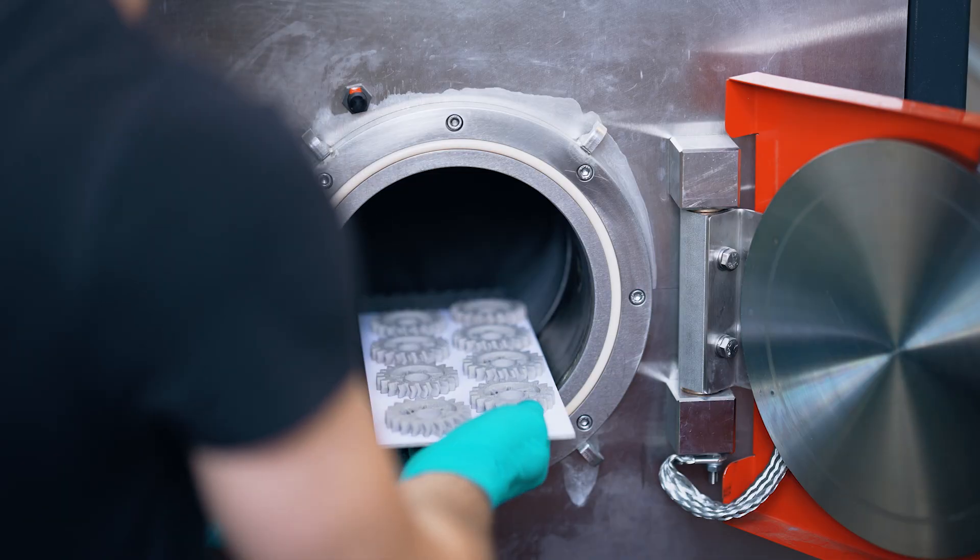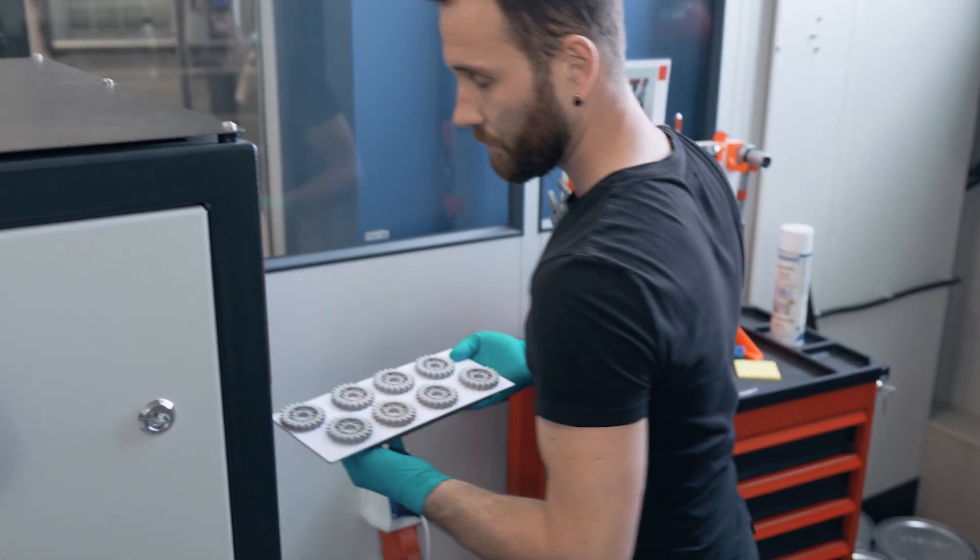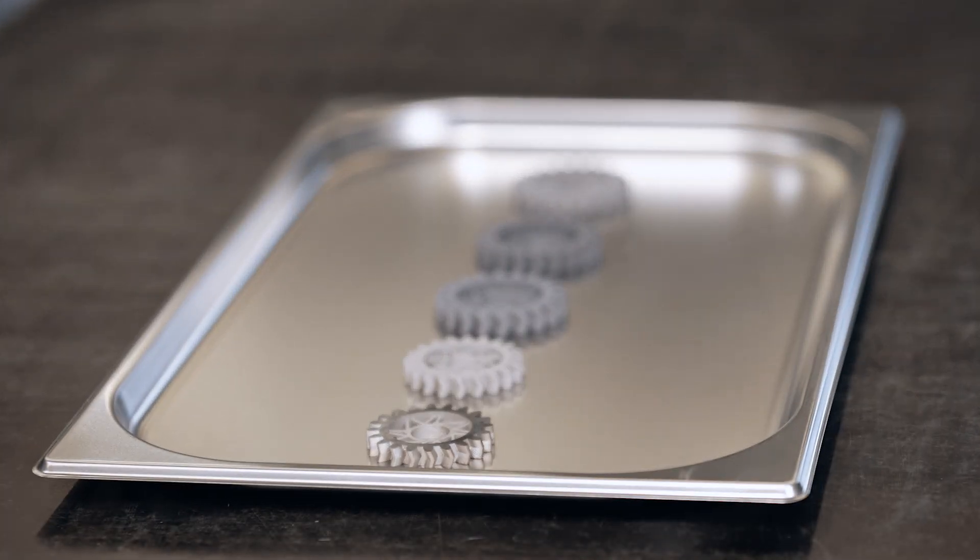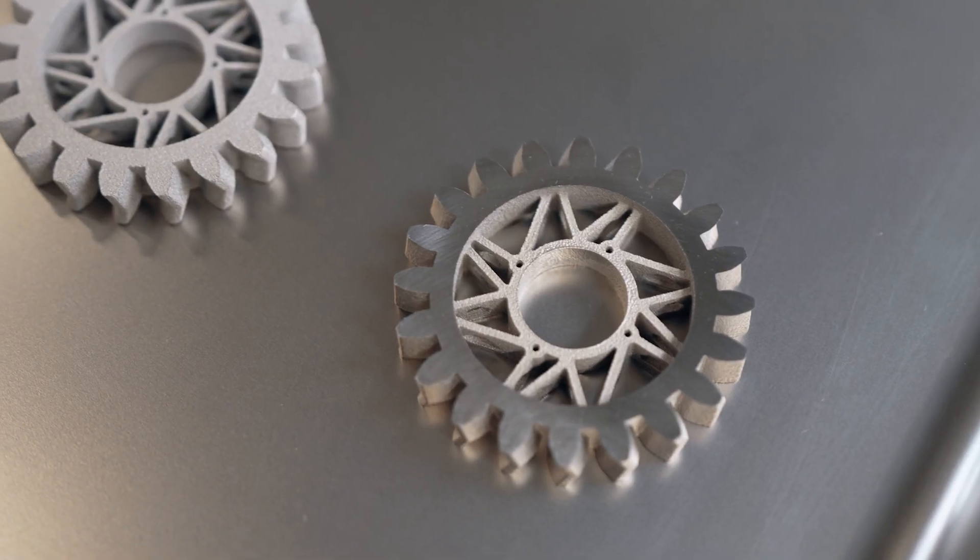The sintering process takes about 12 to 15 hours. The really nice thing about it is it doesn't matter how big your furnace is. With Cold Metal Fusion you can start with one part, develop it for the process chain, and then scale up into the millions and you would still have 12 to 15 hours.